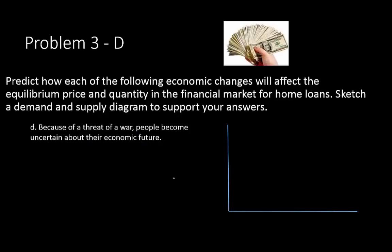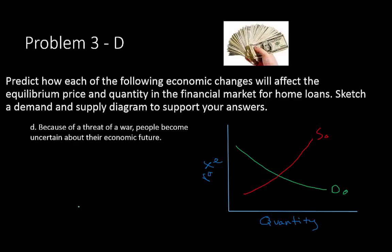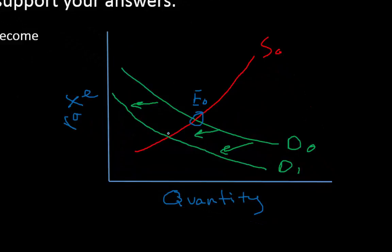Problem 3d: because of a threat of war, people become uncertain about the economic future — almost the opposite of problem B. When people are more uncertain, there is less borrowing, so demand for money from the financial market decreases and shifts left to D1. The new equilibrium shows both the rate and quantity decreasing.